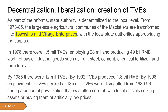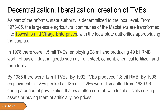The TVEs were then dismantled during the privatization period from 1989 to 1996 — a process that was often corrupt, with local officials seizing assets or using their power to buy them at artificially low prices, a process similar in some ways to what happened in the former Soviet Union. The key difference is that the central state in China was not overturned; this was simply part of the reform effort.